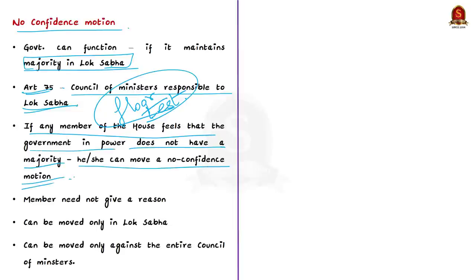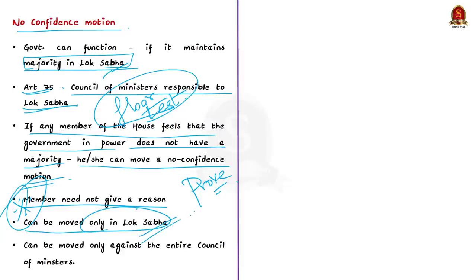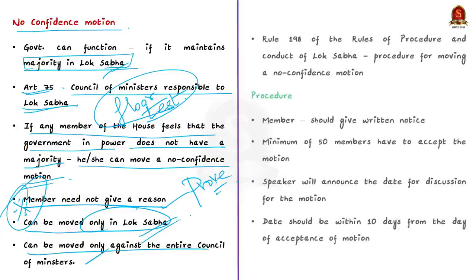If the motion is accepted, the party in power has to prove its majority in the house. The member need not give any reason for moving the no-confidence motion. Since the council of ministers is responsible only to the Lok Sabha, a no-confidence motion can be moved only in the Lok Sabha, by any of its members, and it can be moved against the entire council of ministers only. Rule 198 of the Rules of Procedure and Conduct of Lok Sabha specifies the procedure for moving such a motion.